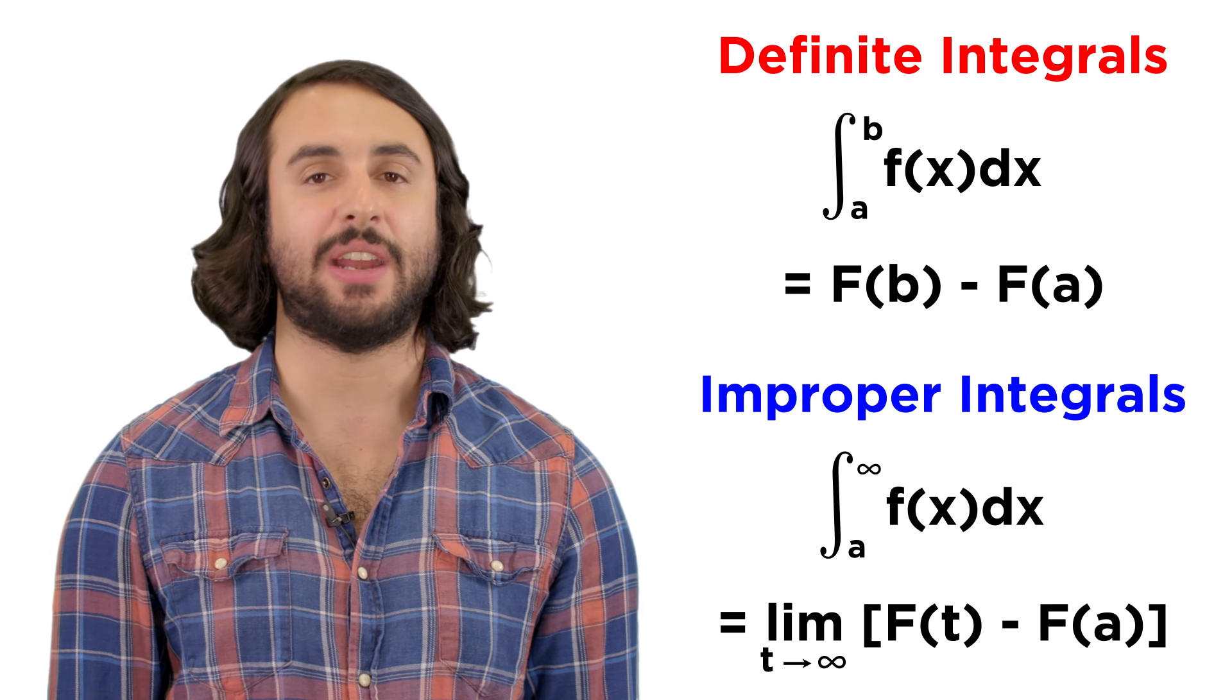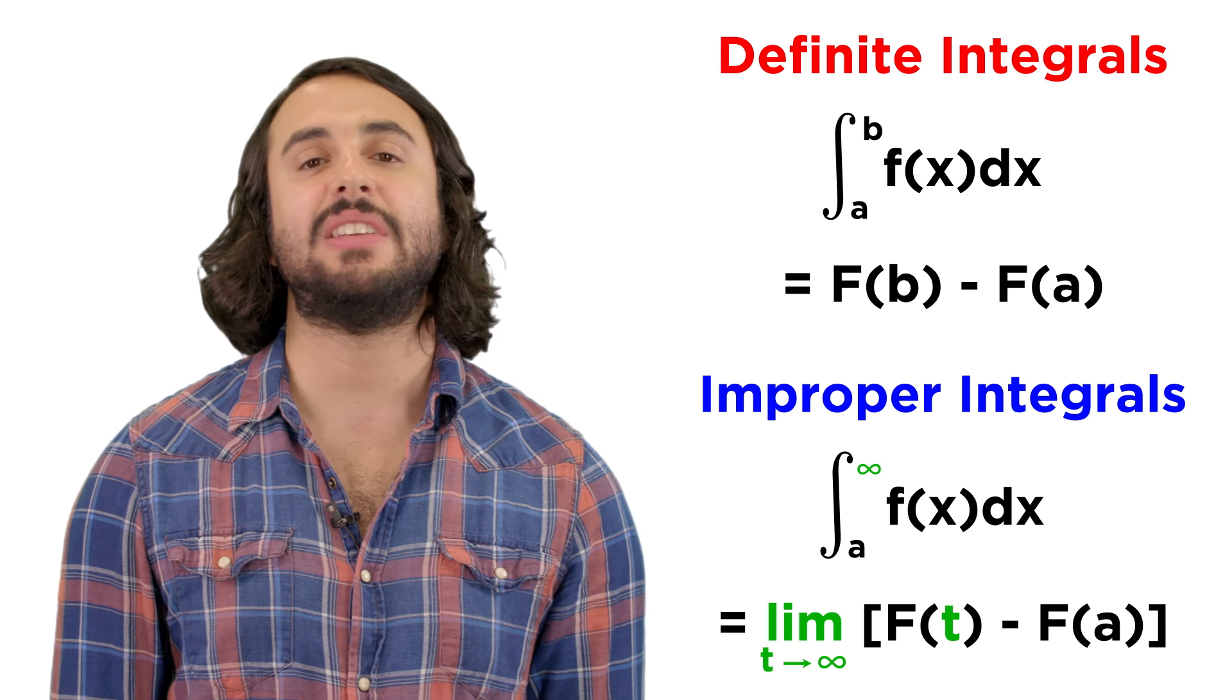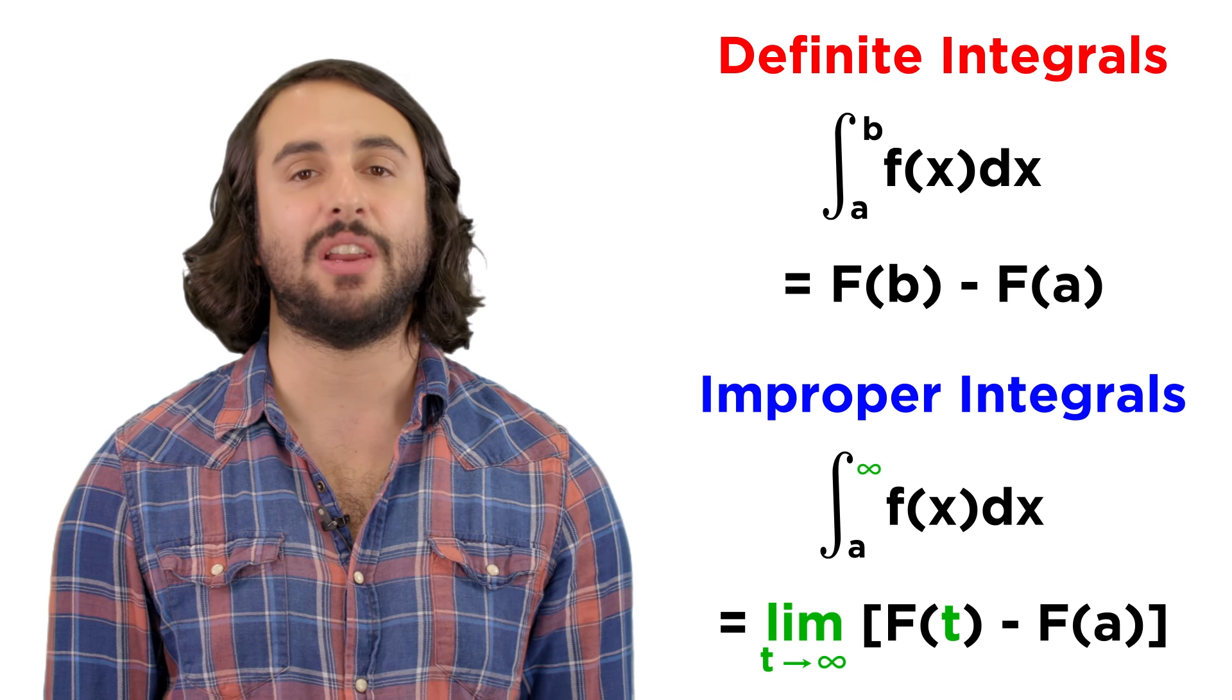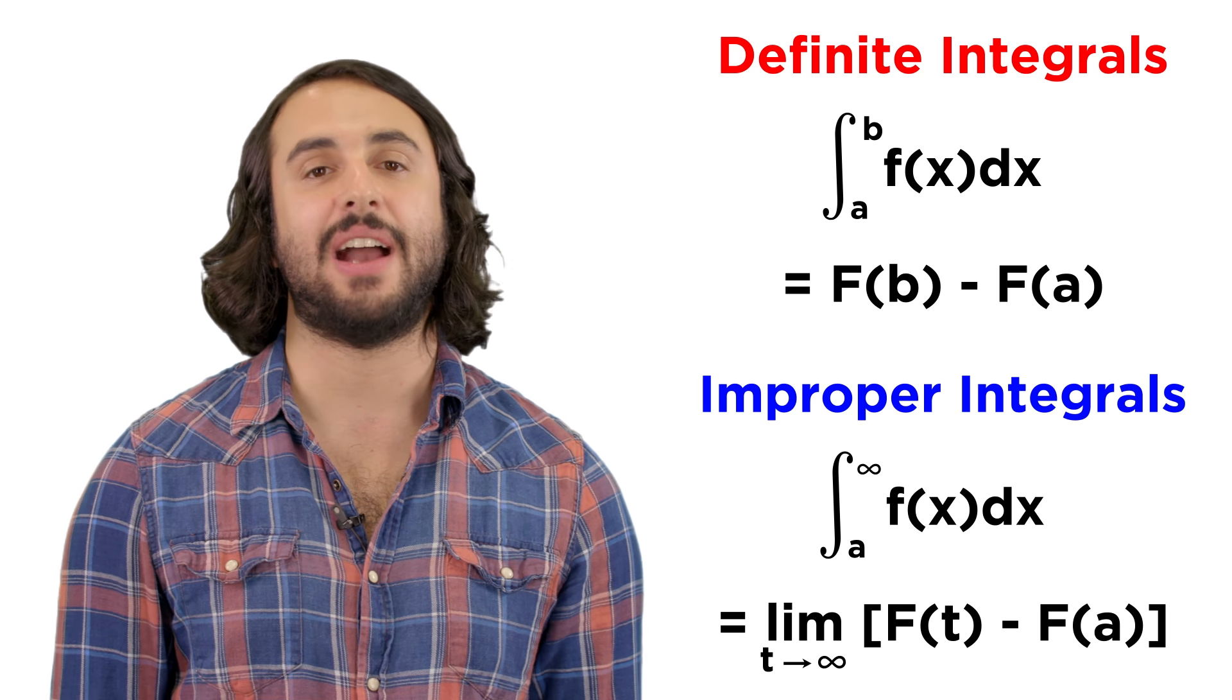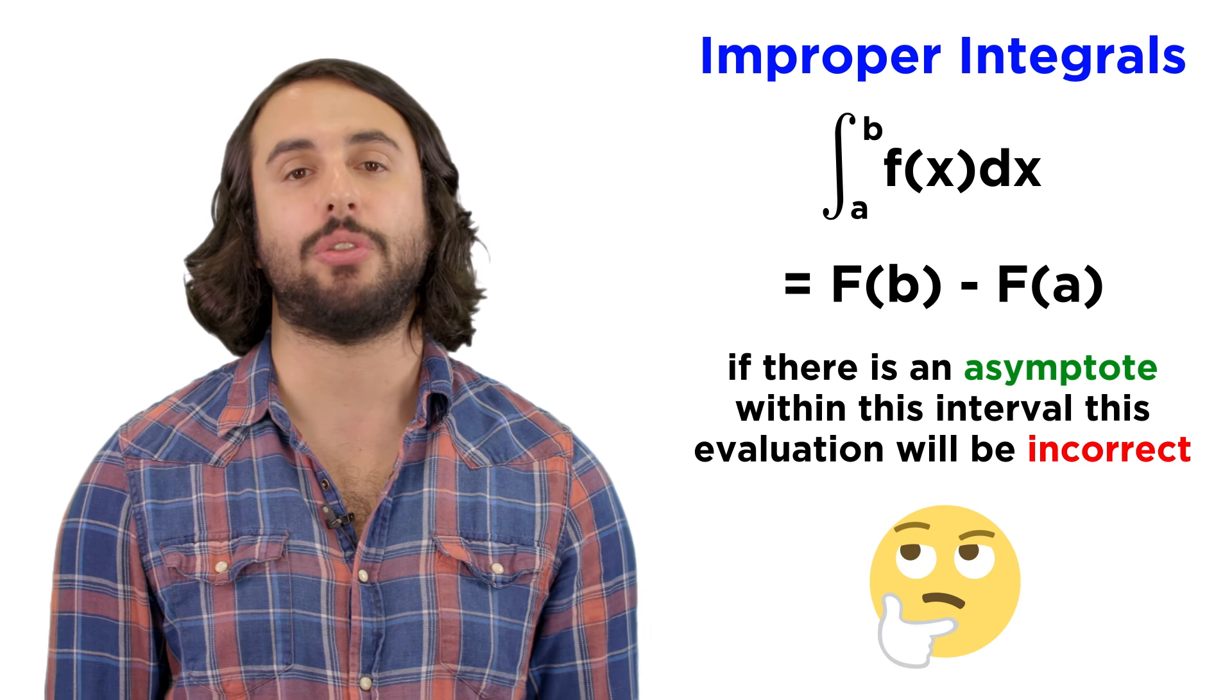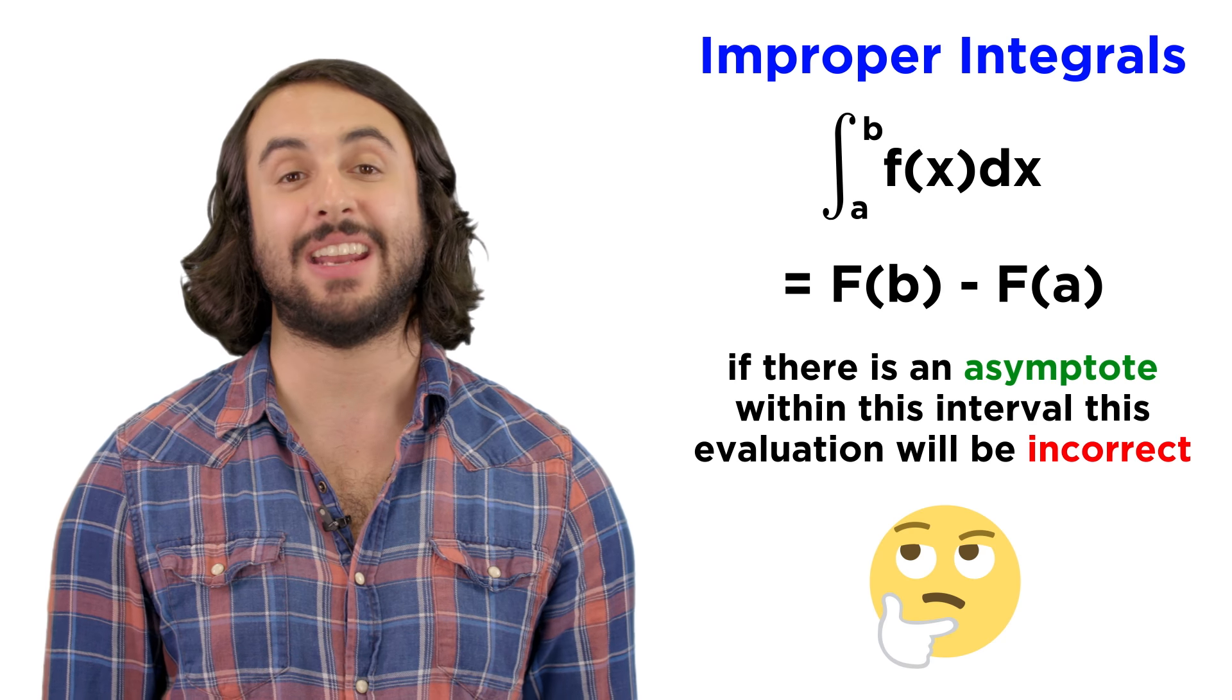So we can see that evaluating improper integrals is not that much different than evaluating regular definite integrals. In fact, it's exactly the same, it's just that we see what happens when one of the limits of integration starts moving towards some particular value, whether positive or negative infinity or some vertical asymptote. It is very important to recognize when an integral is improper because we must evaluate it accordingly. Evaluating an improper integral as though it is a definite integral, simply evaluating the antiderivative at the limits of integration and subtracting, can indeed yield incorrect values.